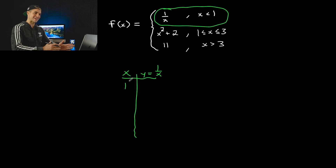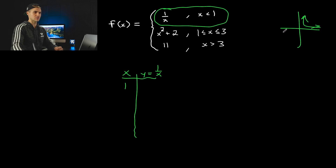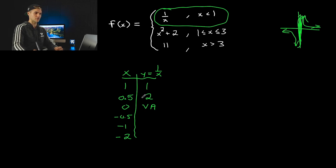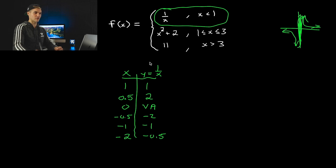We put x values less than 1. Now 1 over x is just the reciprocal parent function. The x values we use in that parent table are 0.5, 0, negative 0.5, negative 1, and negative 2. Plugging in 1 gives a y value of 1; plugging in 0.5 gives y equals 2. Plugging in 0 gives a vertical asymptote. Then 1 divided by negative 0.5 is negative 2, negative 1, negative 0.5. That's the table for this first function.